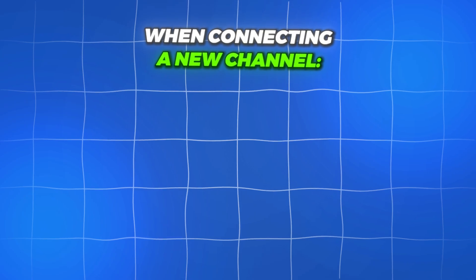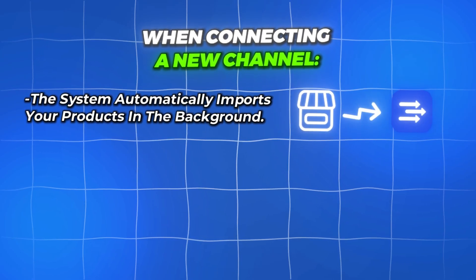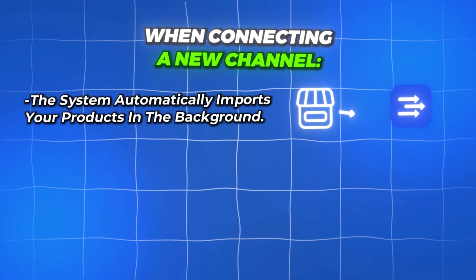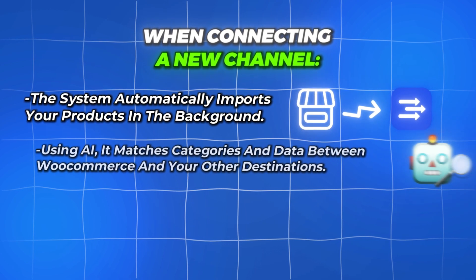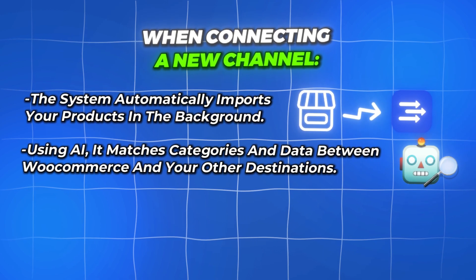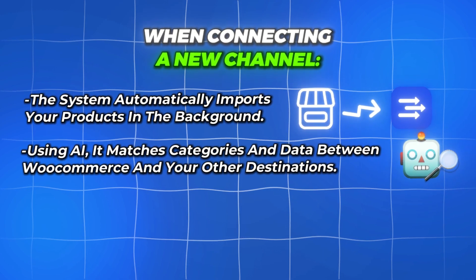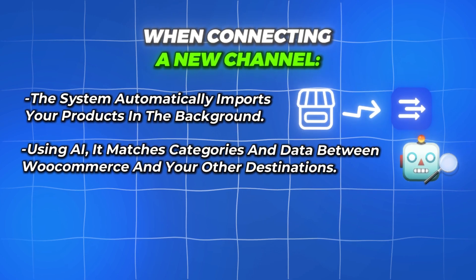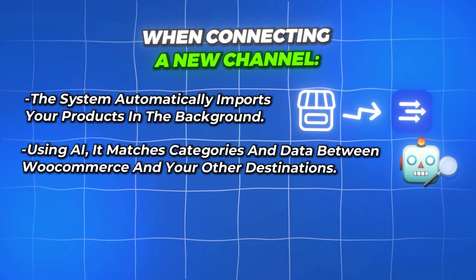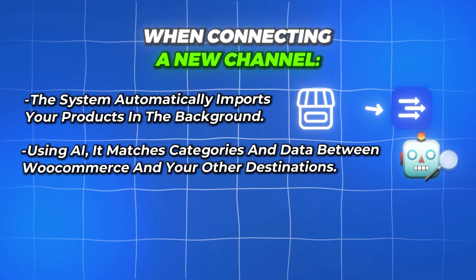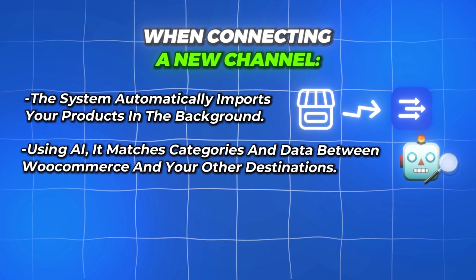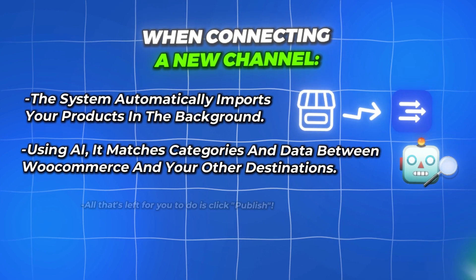In the background, Easy Channel automatically imports your Amazon products and uses AI to map your product categories to eBay's categories. This ensures your products are ready to go on eBay without any manual setup.